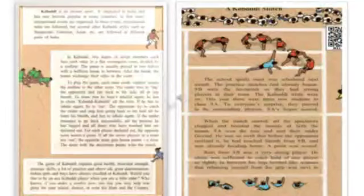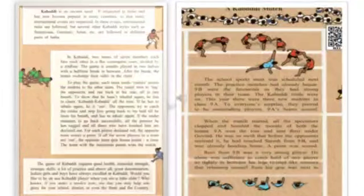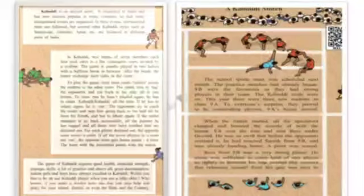Page 15, Kabaddi. Kabaddi is an ancient sport. It originated in India and has now become popular in many countries, so that many international events are organized. In these events, international rules are followed but several other Kabaddi styles such as Sanjivani, Gamini, Amar etc. are followed in different parts of India.